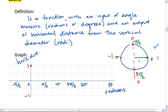Then, at pi over 2, we're down to 0. At pi, we're at negative 1. 3 pi over 2, 0 again. And back up to 1.